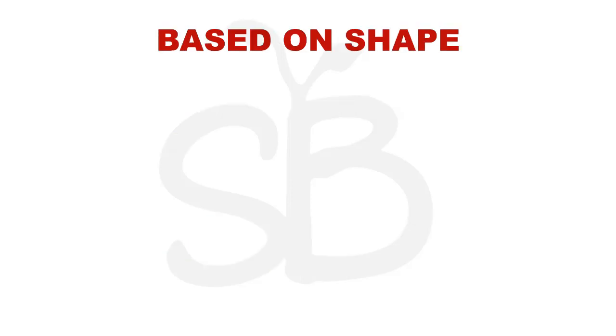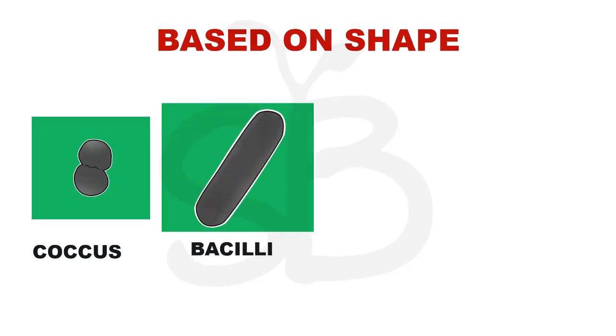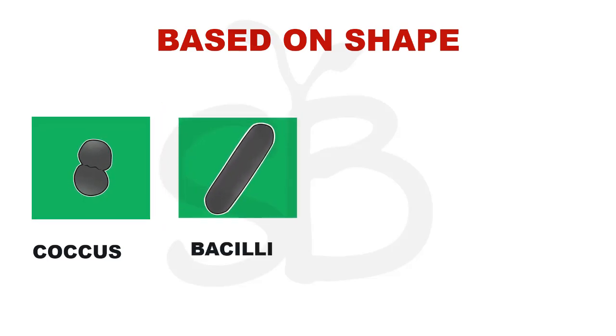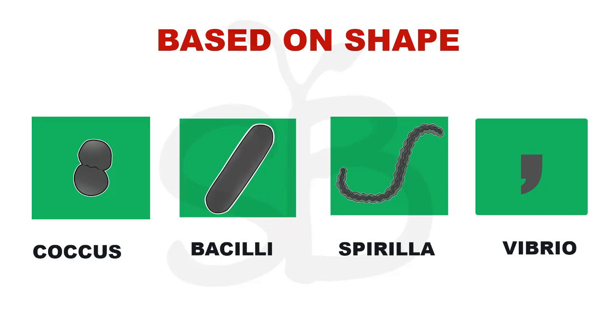The second method is the shape. They have four categories: spherical coccus, rod-shaped bacillus, spiral-shaped spirillum, and comma-shaped vibrio.